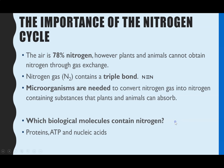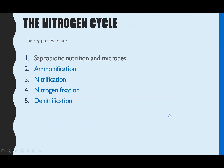The nitrogen cycle can be split into four key processes, and that's what we're going to go through with a diagram. We're going to go through what ammonification is, nitrification, nitrogen fixing, and denitrification.